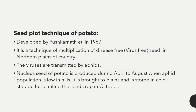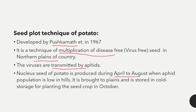The next topic is seed plot technique of potato. This technique was developed by Pushkar Nath in 1967 for multiplication of disease-free or virus-free seeds in northern plains. Viruses are transmitted by aphids. The nuclear seed of potato is produced during April to August when the aphid population is low in hilly areas, then brought to plains and stored in cold storage for planting in October.